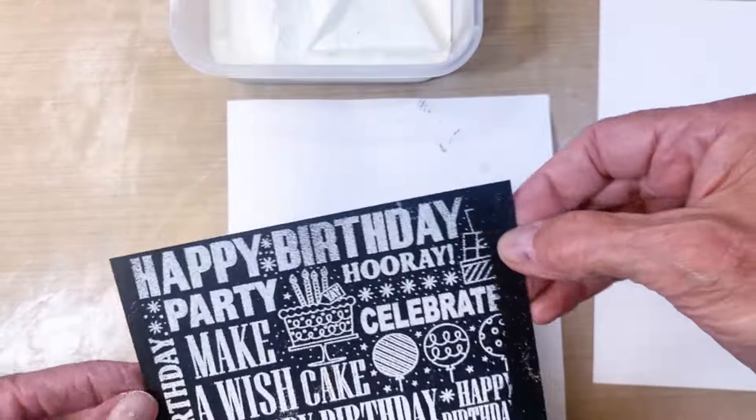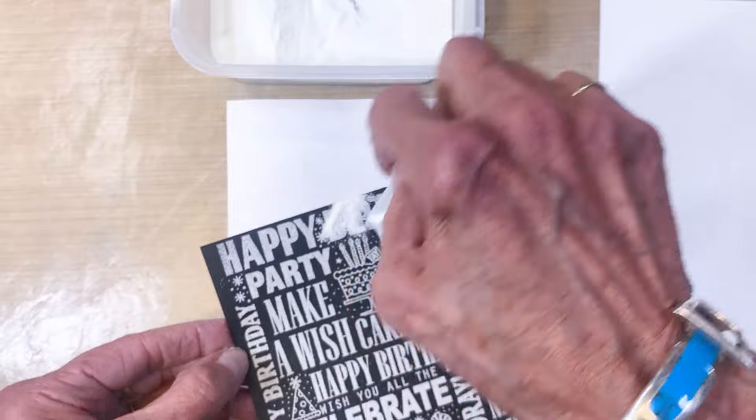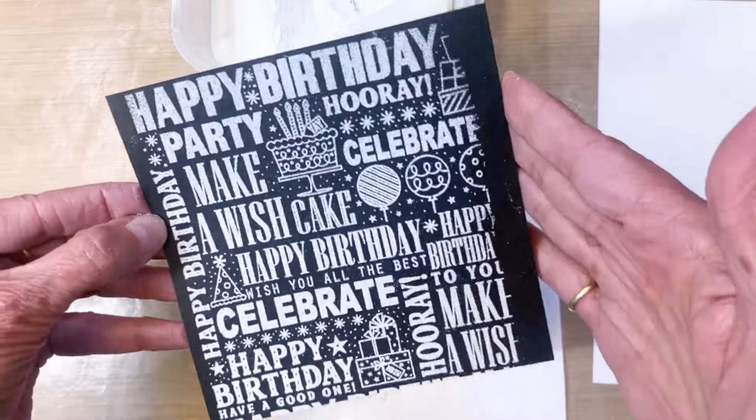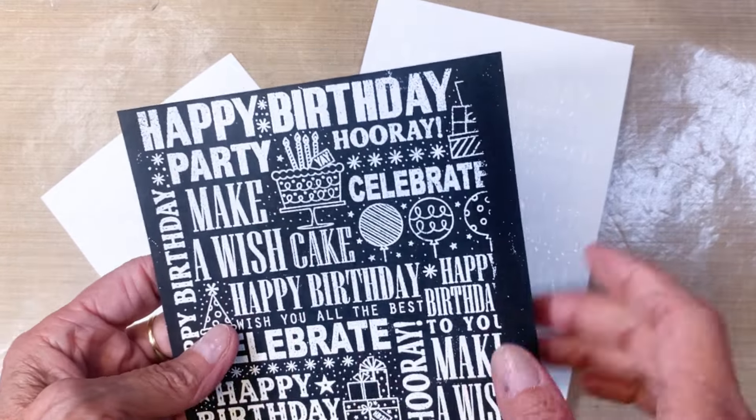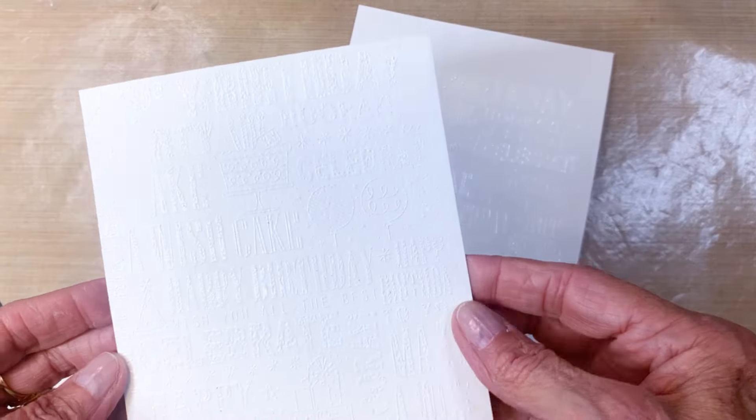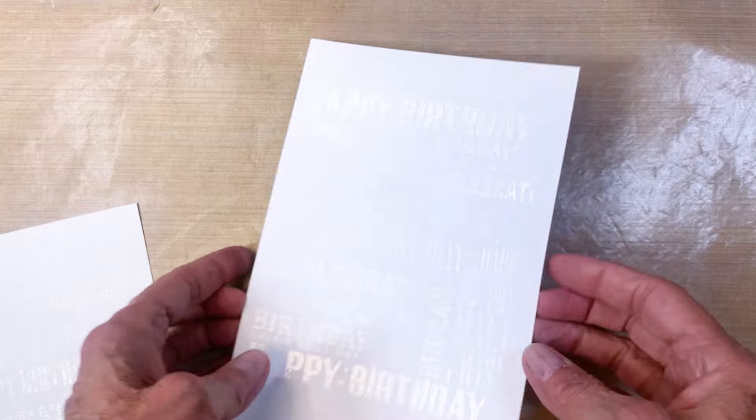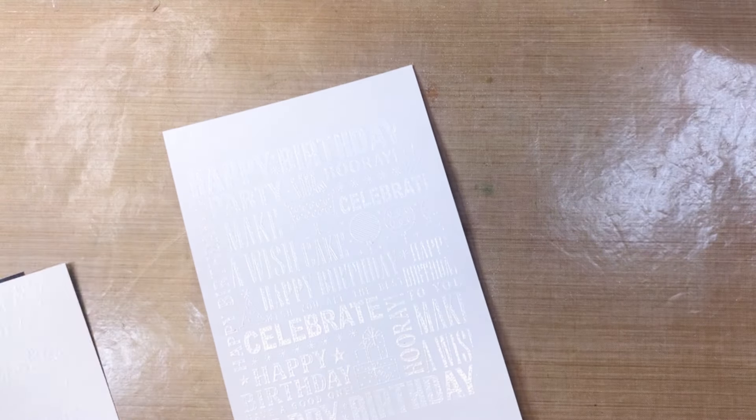I also used the white embossing powder on the watercolor background as well as on the cougar cardstock. So you'll see what techniques I used for each one of them. Here I'm showing you the watercolor cardstock and the cougar cardstock.